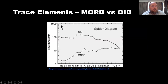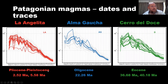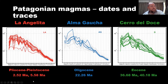This is a trace element spider diagram you might see in a petrology textbook. You can see that mid-ocean ridge basalt has a downward sloped pattern, whereas ocean island basalt has an upward slope. Looking at magmas from Patagonia, here on the left we see the La Angelita formation — these are very clearly OIB-type magmas, which is interesting given that we might expect mid-ocean ridge type basalt here. The ages of these magmas do coincide with that slab window period beginning about 16 million years ago.